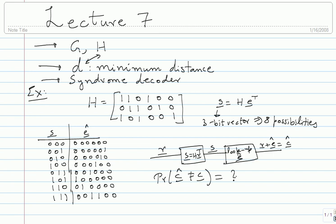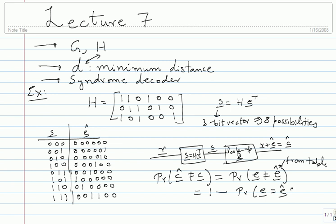The key point is to think in terms of E rather than C. The error vectors Ê in the table are exactly the correctable error vectors. If the actual error E that occurred is not equal to any of those Ê values, I will definitely make an error. So the probability of error equals 1 minus the probability that E equals one of the Ê's from the table.